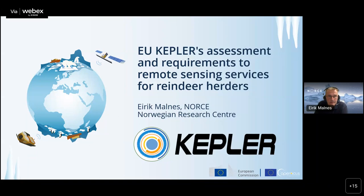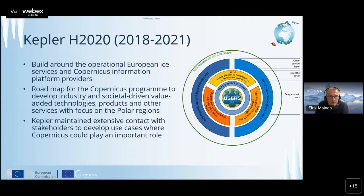I will present results from the Kepler project, which did an assessment of the requirements for remote sensing services for reindeer herders. Kepler ran from 2018 to 2021 and was built around the operational European ice services but also on the Copernicus information platform providers. We provided a roadmap for the Copernicus program to develop industry- and societally-driven value-added technologies and products with a focus on the polar regions.